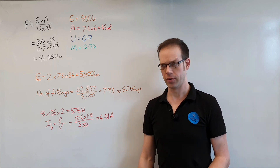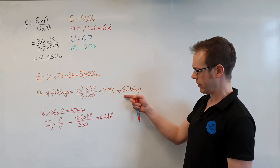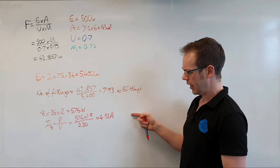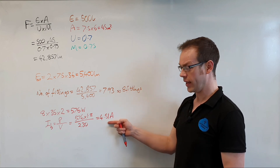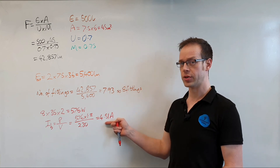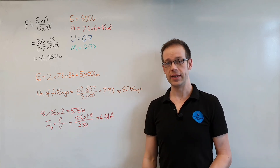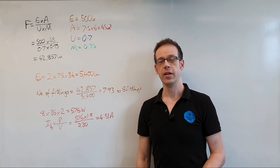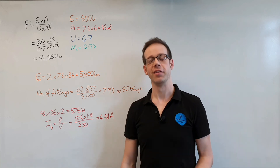So we've answered both parts of the question: the number of light fittings needed is eight, and the circuit needs to be designed to carry a current of 4.51 amperes. Thank you very much for watching.